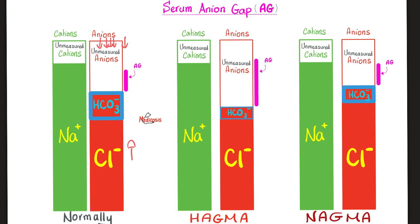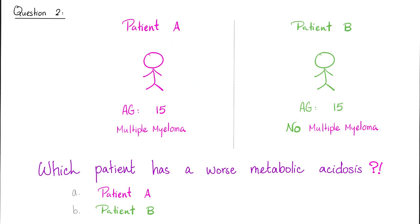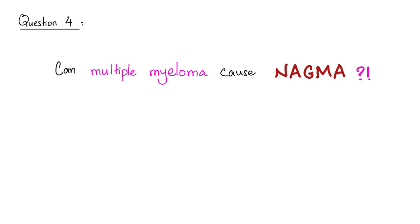Most physicians don't grasp these basic facts — even those who know multiple myeloma may decrease the anion gap have no idea why. Here are four clinical questions. One: a patient with untreated aggressive multiple myeloma has an anion gap of 12, is vomiting, and is tachypneic — do they have metabolic acidosis? Two: patients A and B have the same anion gap, but patient A has multiple myeloma and patient B does not — which has a worse metabolic acidosis? Three: can multiple myeloma on its own widen the anion gap? Four: can multiple myeloma cause normal anion gap metabolic acidosis?